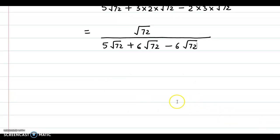Now if we simplify further, this positive 6 root 72 and this negative 6 root 72, these two terms get cancelled. So what we have is root 72 upon 5 times root of 72.